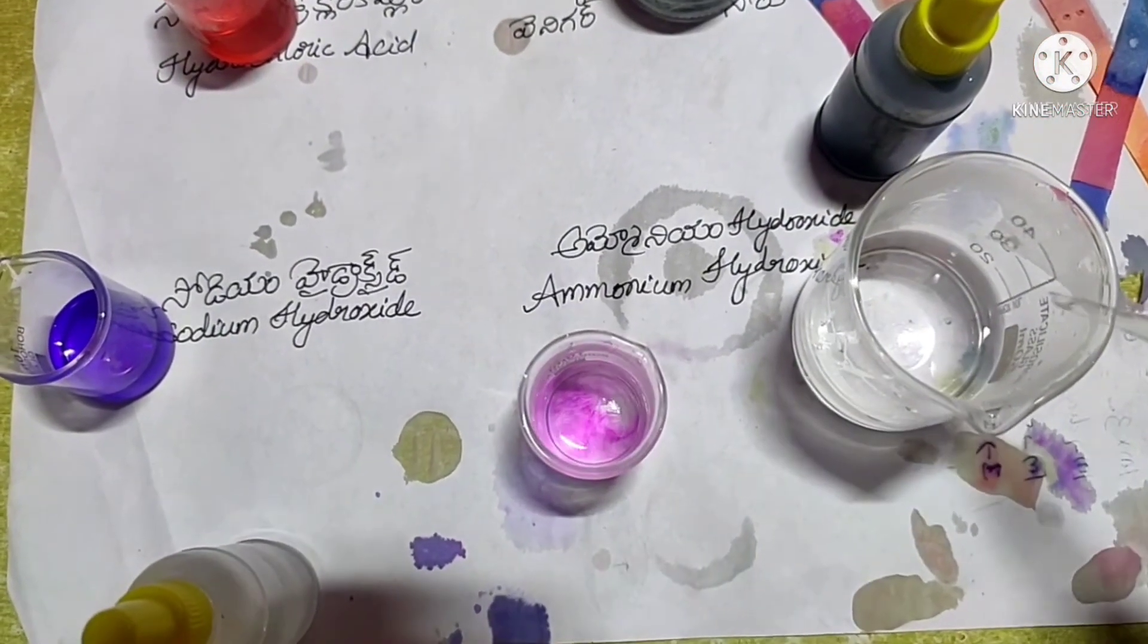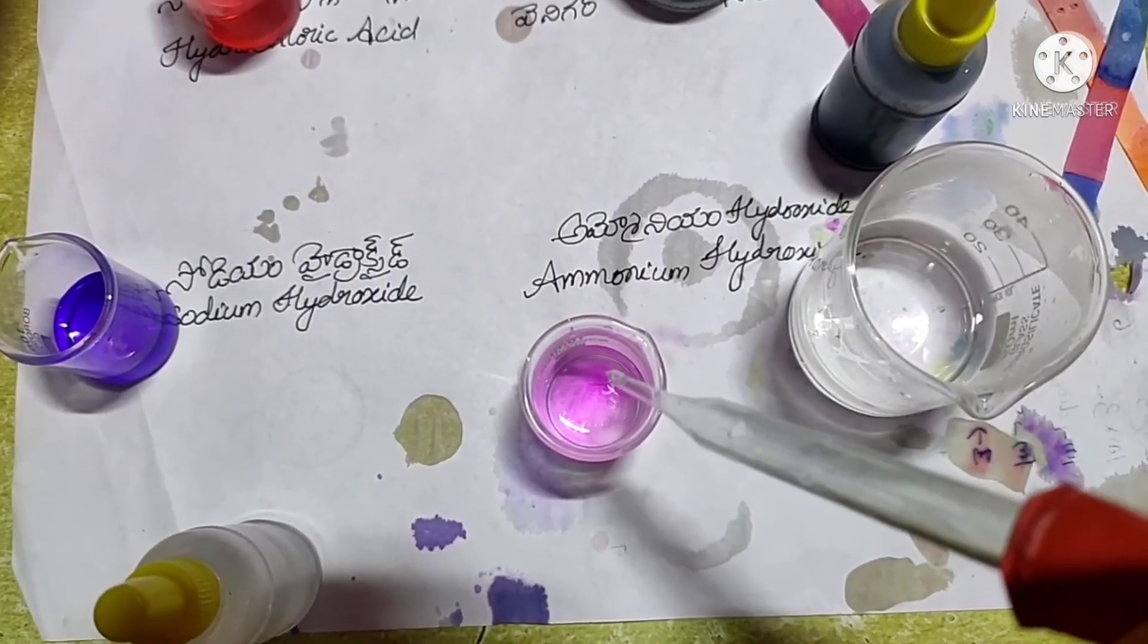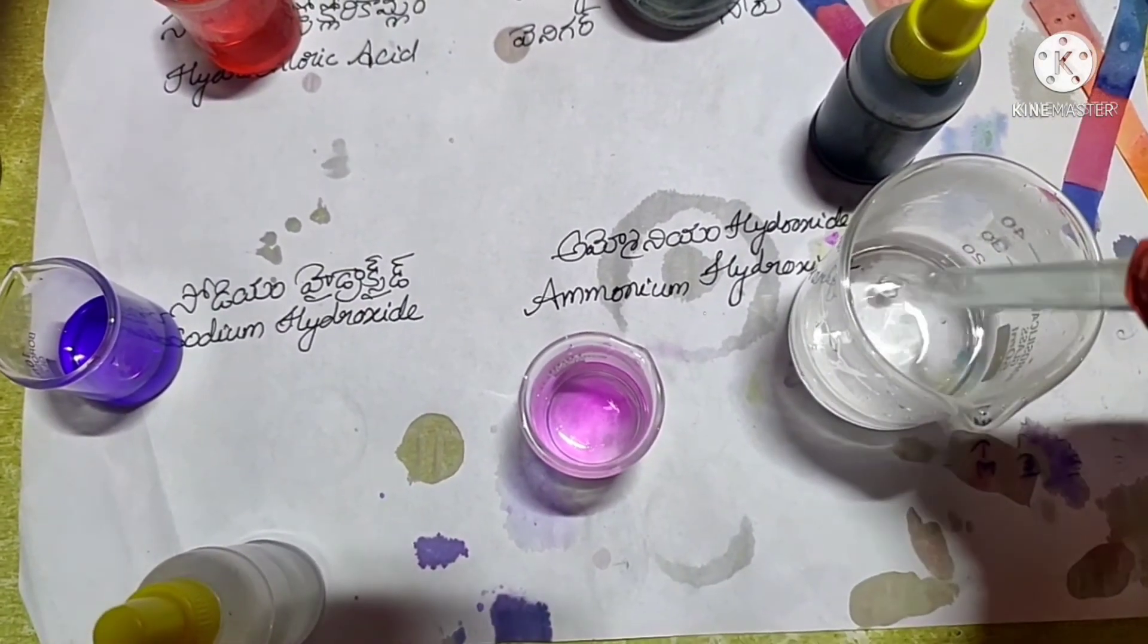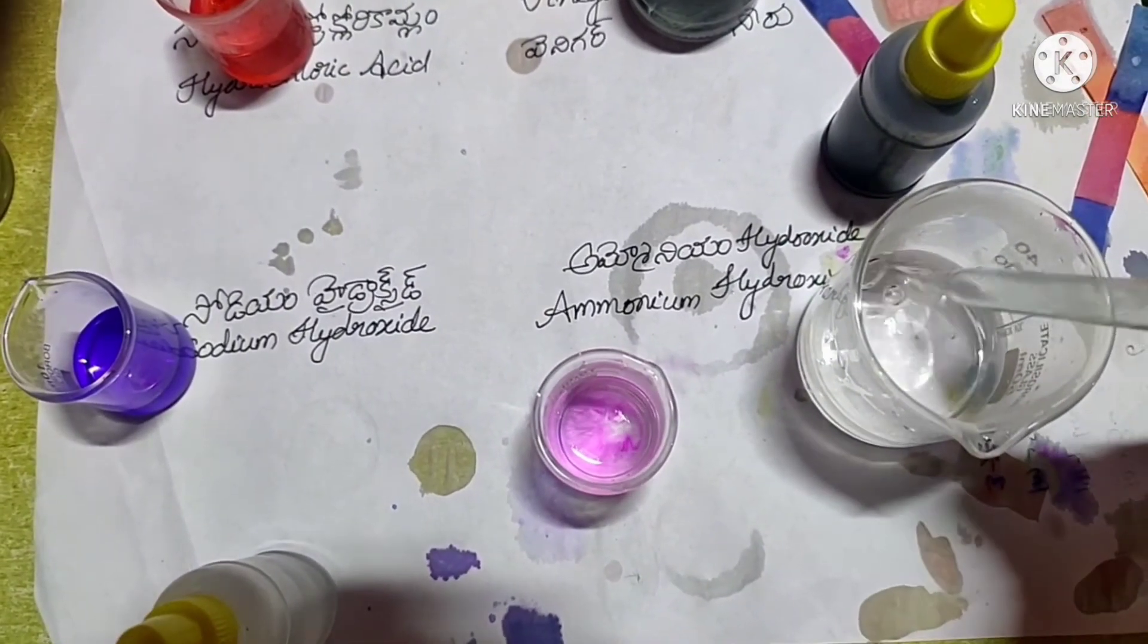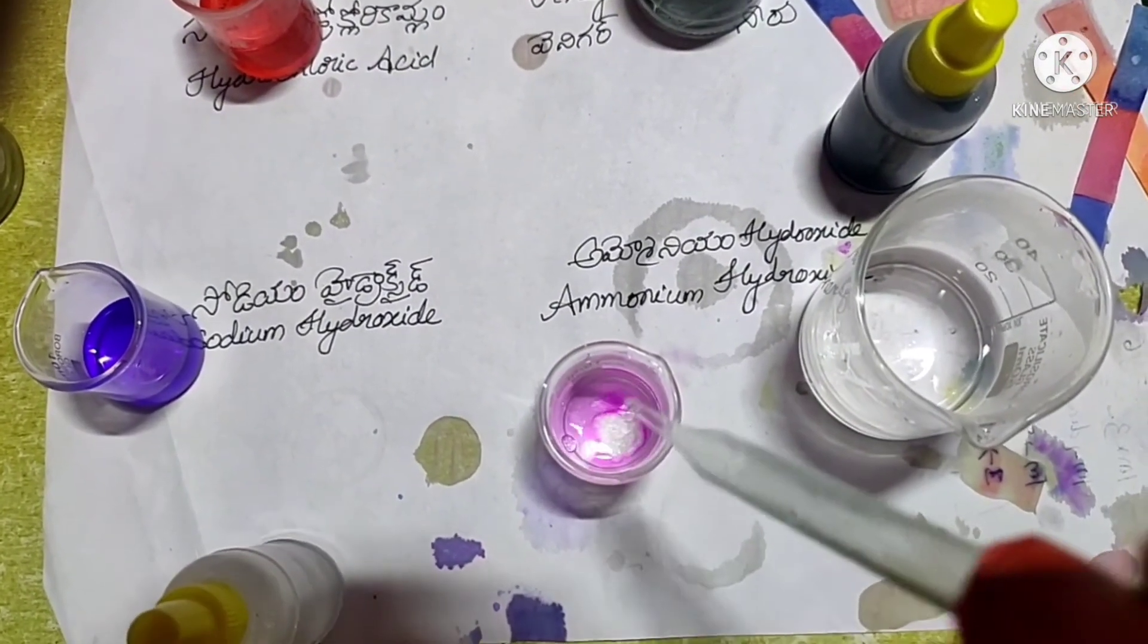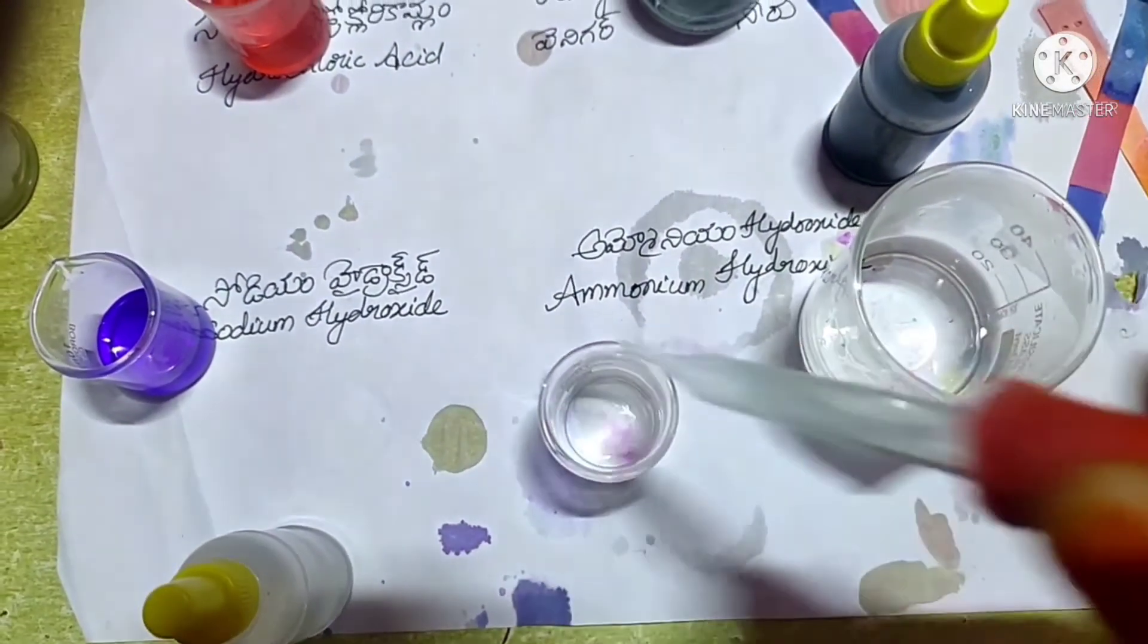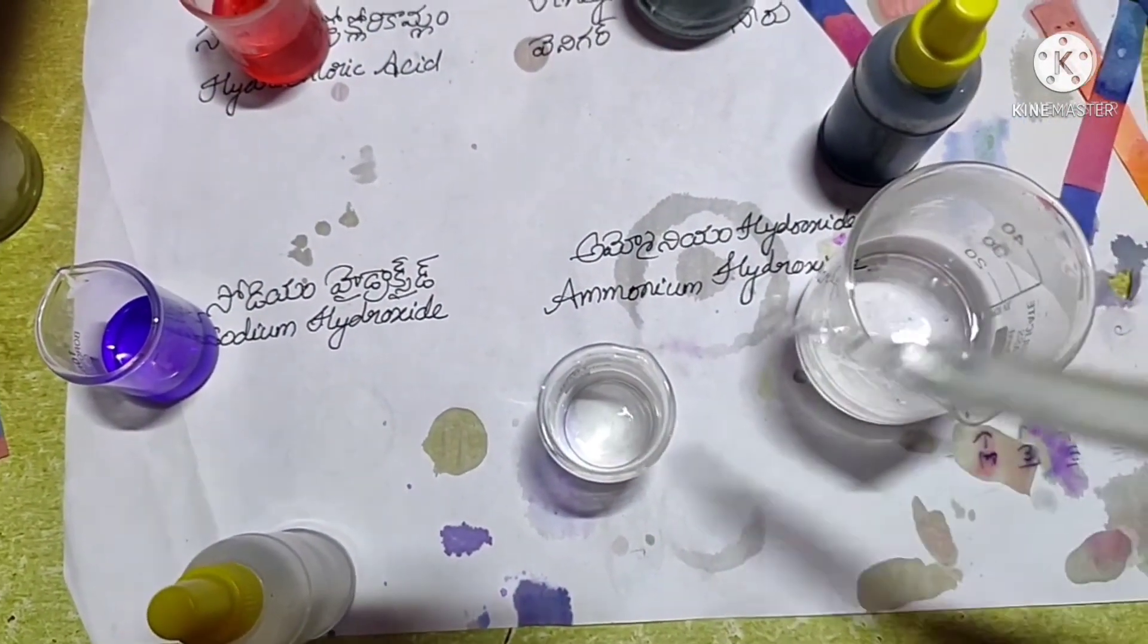Can you guess the substances formed in the flask? Those are salt, that is sodium chloride, and water, because acids react with bases to form salt and water.